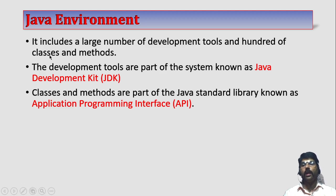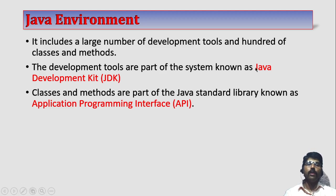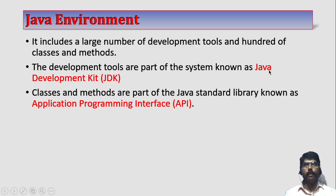The classes are arranged in packages. The development tools are part of the system known as Java Development Kit, in short called as JDK. JDK is nothing but different tools for compilation, for interpretation, for converting, for debugging.